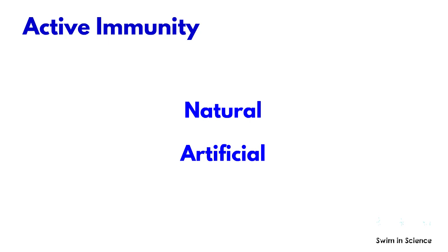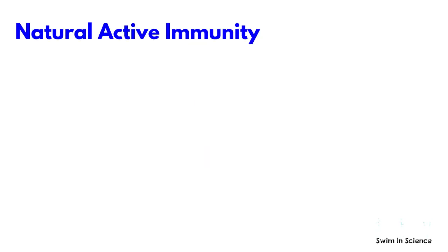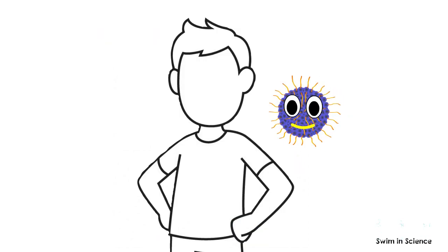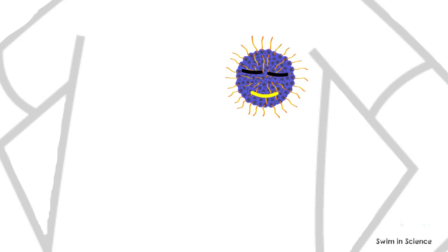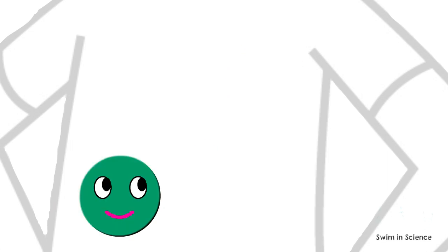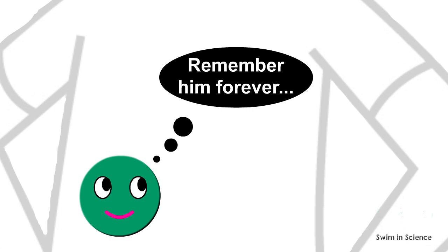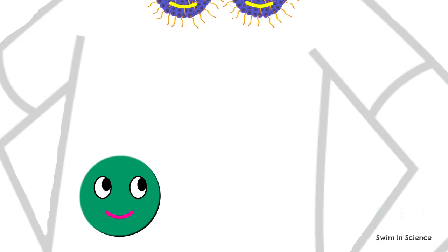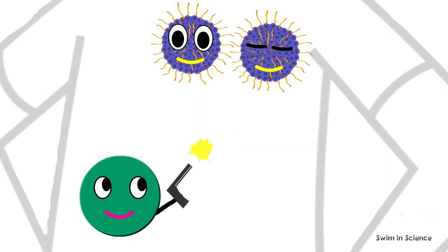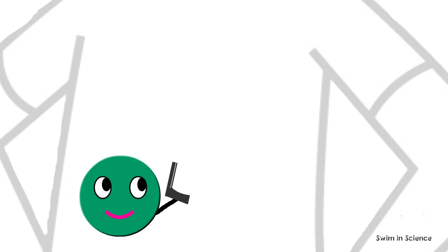Active immunity can be either natural or artificial. Natural active immunity occurs when a person is infected by a pathogen. For example, if a person is infected with the chickenpox virus, the person's immune system fights against the pathogen and simultaneously develops immune memory for the virus. As he developed immunologic memory, if the person is exposed to the same virus in the future, he will be able to fight against it quickly without developing the disease.